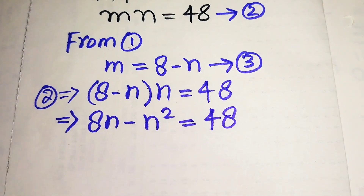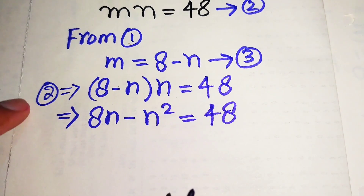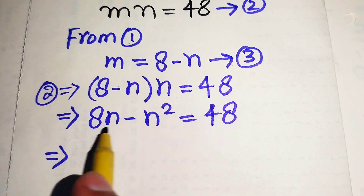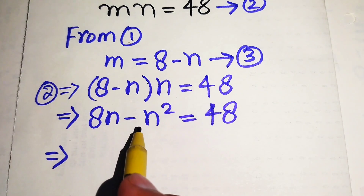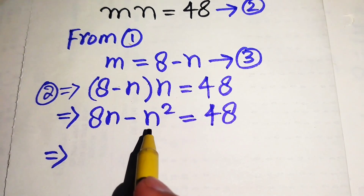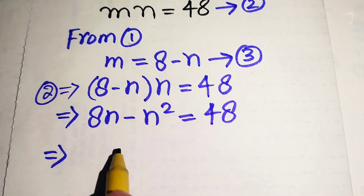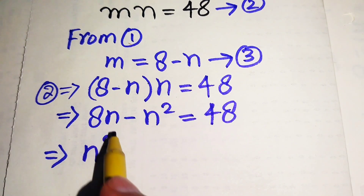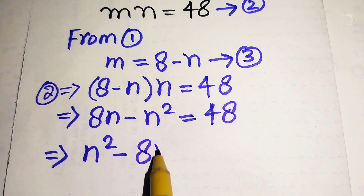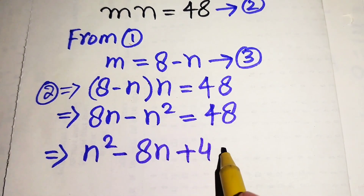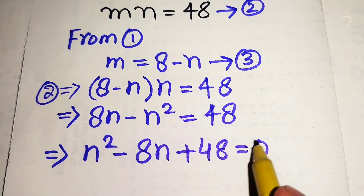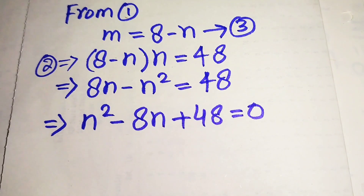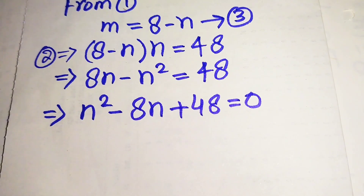Next, we rearrange all terms. Moving minus n squared and 8n to the right-hand side gives us n squared minus 8n plus 48 equals 0. This is now in quadratic form, so we use the quadratic formula to solve it.